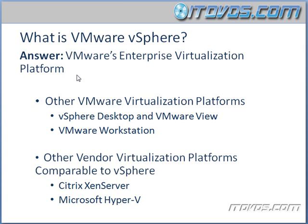For example, the operating system that makes virtualization possible is ESXi, and that's part of vSphere. Another part is vCenter, which we use to manage all of our ESXi hosts — so that's also part of vSphere. Again, it's all the components that come together to make VMware's enterprise virtualization platform.